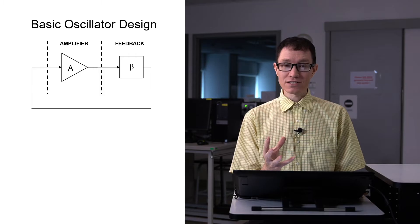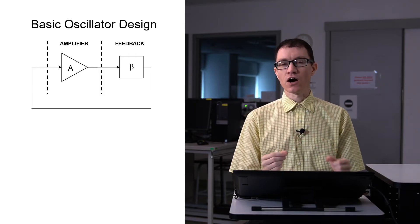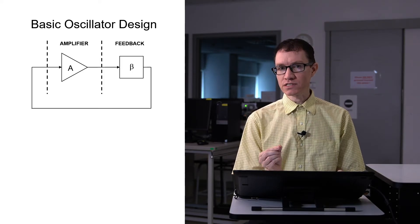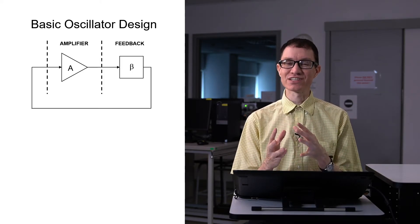So if we hope to make, for example, a radio frequency oscillator, we're going to want to use a transistor amplifier rather than an op amp. Oscillators like the Wien Bridge oscillator or the Phase Shift oscillator are meant to work at low frequencies, at audio frequencies, because they have resistors and capacitors in the feedback network.